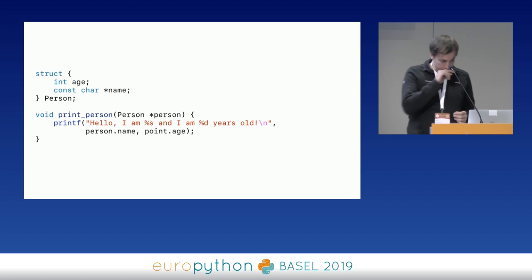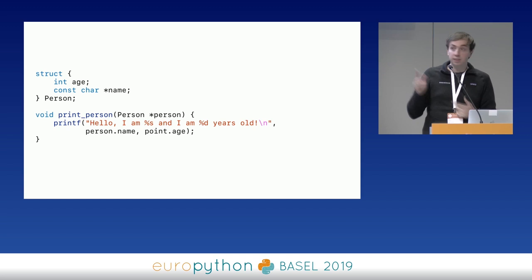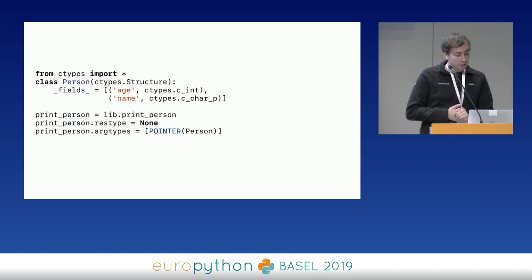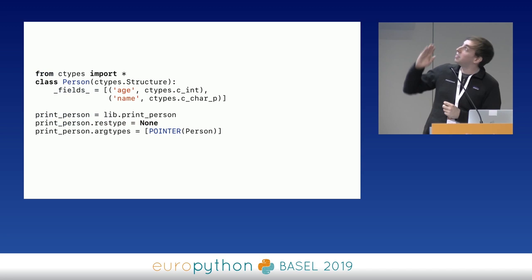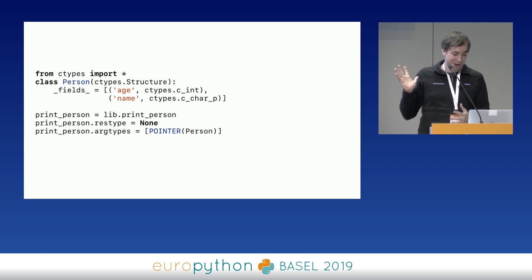Here's an example of a simple C API you might want to use. To make it usable from Python, you have to manually write bindings that teach Python what it means and how to use it. The equivalent ctypes binding requires you to tell Python the structure exists, its fields, the function, the result type, the argument types, etc. But the warning is that you have no compiler — you have complete control, but Python just jumps and hopes for the best. If you make a mistake with a type, it might still work but then cause a crash later down the line.